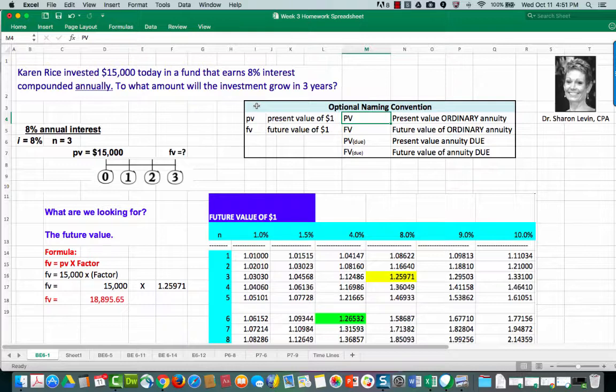When the annuity is an annuity due, meaning that the payments are made at the beginning of the period instead of the end of a period, I will put in parentheses the word due after pv and fv. Again, this is optional. I like to use it. If it works for you feel free to use it also.